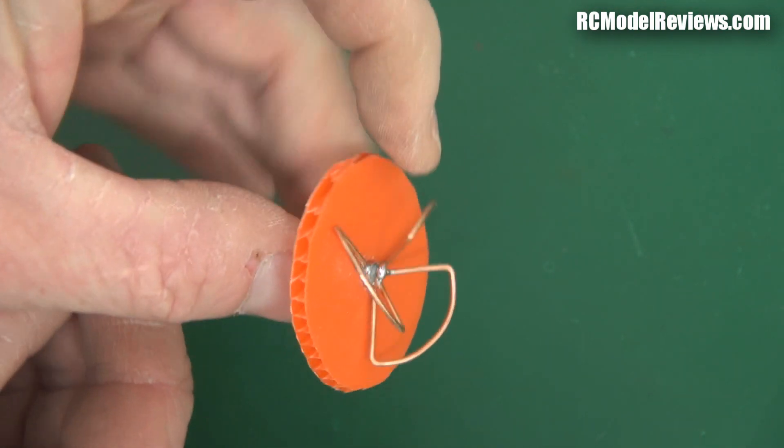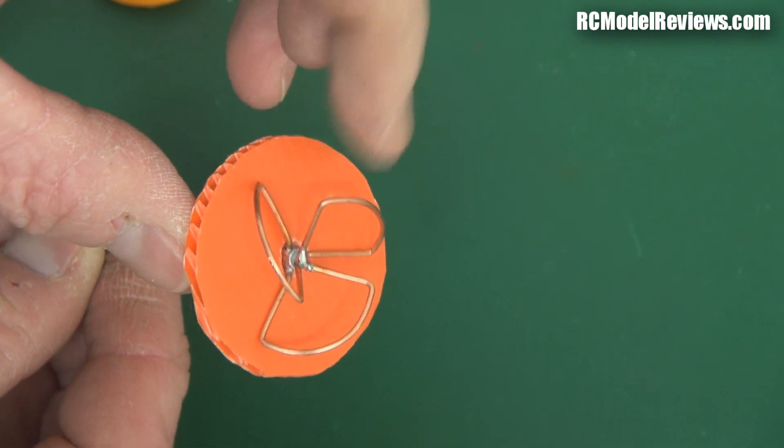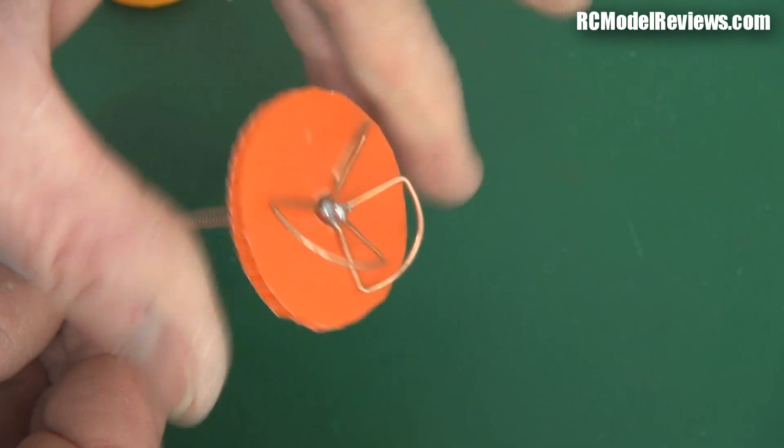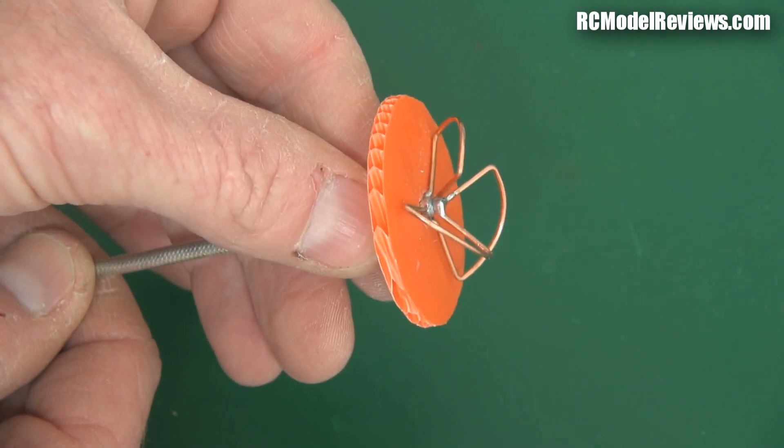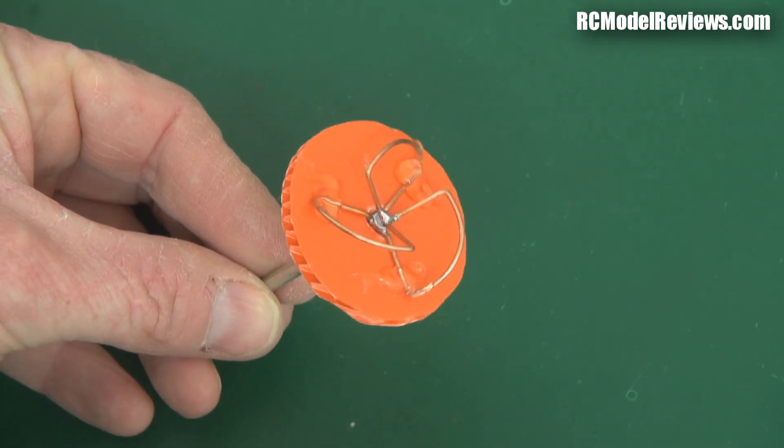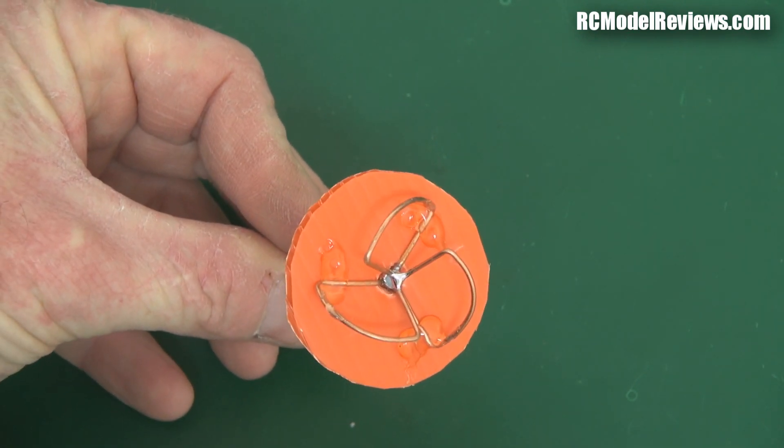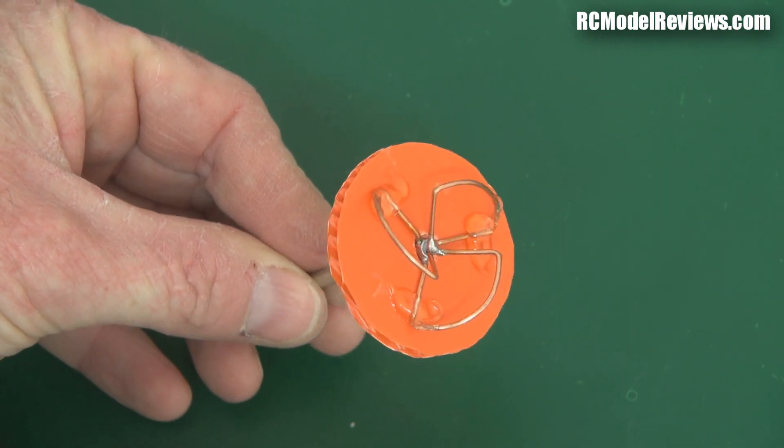What we're going to do now is just put a dab of hot glue on each of these little wires to make sure that the plate is stuck to the antenna. Once you've got those blobs of hot glue on, that's what it should look like—just enough to hold the antenna on the corners there. That'll be just fine.